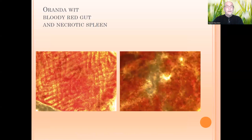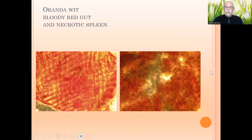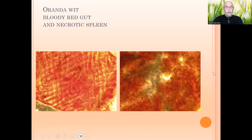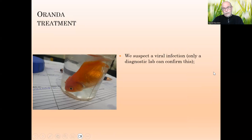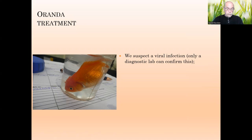This could be caused by bacteria most likely. What surprised me internally was the reddish, bloody-red intestine and necrotic tissue in the spleen — a badly formed spleen with darker parts throughout. So that's two unhealthy organs. This made us suspect a viral infection, and only a diagnostic lab can confirm this, as those pathological symptoms look like a viral infection to me.